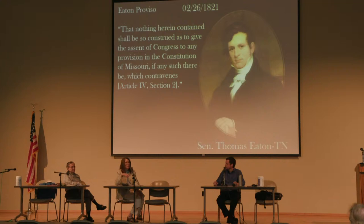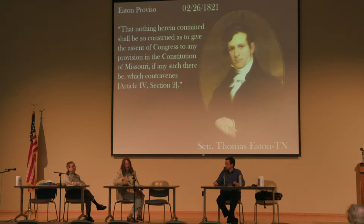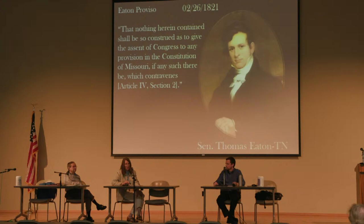The restrictionists saw this as their last opportunity to stop Missouri — this provision didn't fit with the Constitution of the United States. Eaton stepped up and offered this attachment to Missouri's application: 'Nothing herein contained shall be so construed as to give the assent of Congress to any provision in the Constitution of Missouri, if any such there be, which contravenes Article 4, Section 2 of the U.S. Constitution.' In other words, you can't violate the U.S. Constitution with your state constitution. Clay put that Eaton Proviso aside, began offering other pieces of legislation, and when nobody was paying attention, had an aide take it to the Senate — and the Senate thought it had been passed. So Missouri was going to have to fix that part of their constitution.